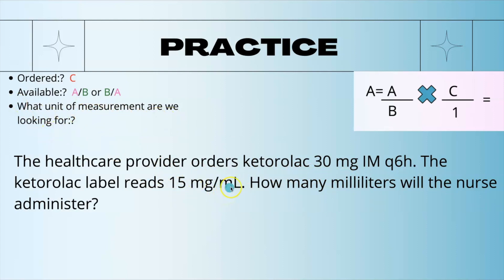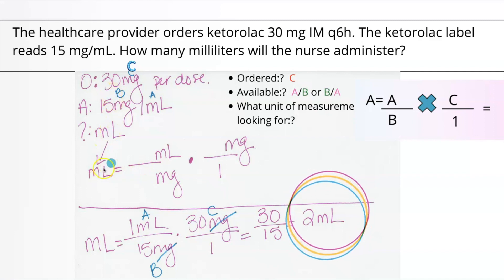What unit of measurement are we looking for? Milliliters. So milliliters is going to be our A. Our A here is going to be the 1, and this goes with 15. We're putting the 15 here and multiplying it by something else that will cancel out, which has to be the 30. So 1 mL over 15 milligrams, because 1 milliliter contains 15 milligrams. We're putting the 30 up here because we need to cancel these units of measurement out. 30 divided by 15 is 2 milliliters.